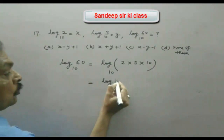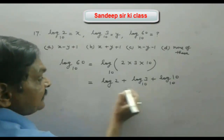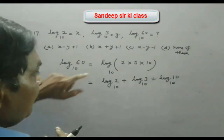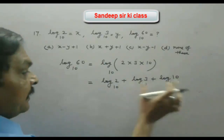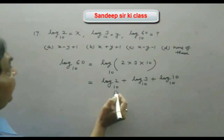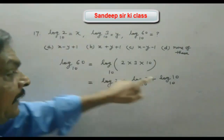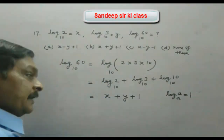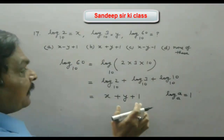Using the property log(m × n) to the base a = log m + log n, we write log 60 = log 2 + log 3 + log 10, all to base 10. Since log 2 = x, log 3 = y, and log 10 to base 10 = 1, we get log 60 = x + y + 1.